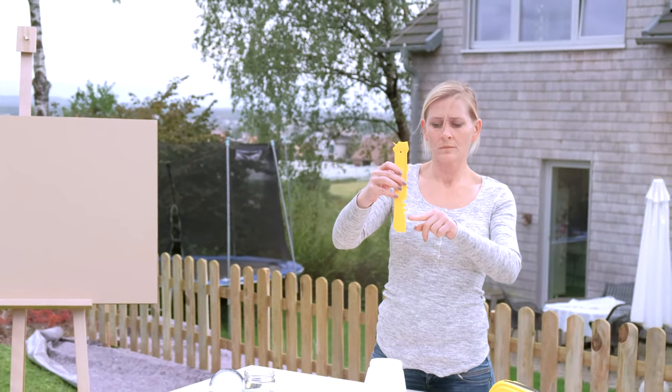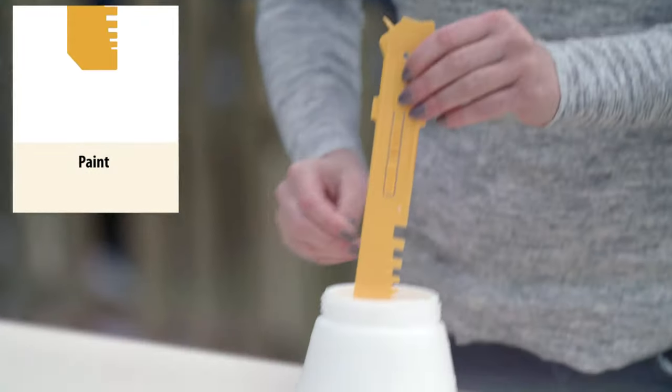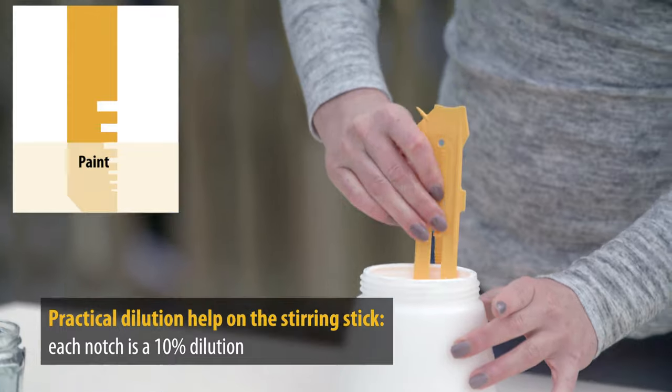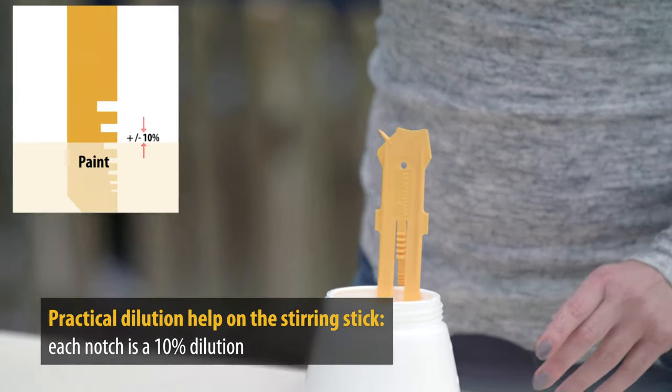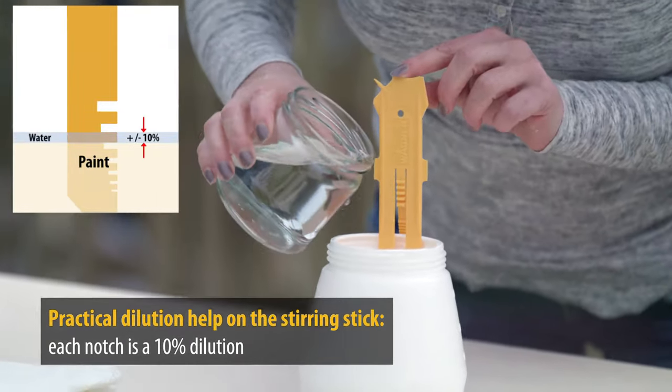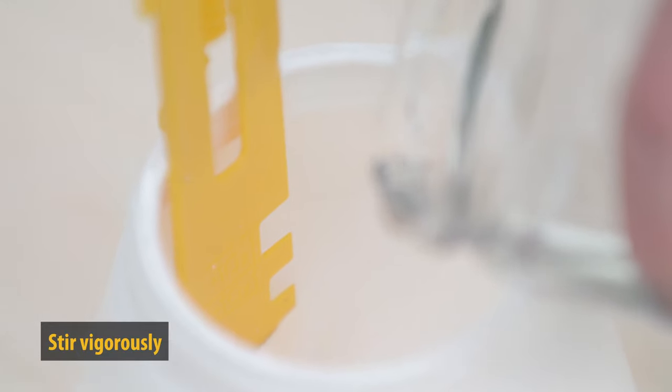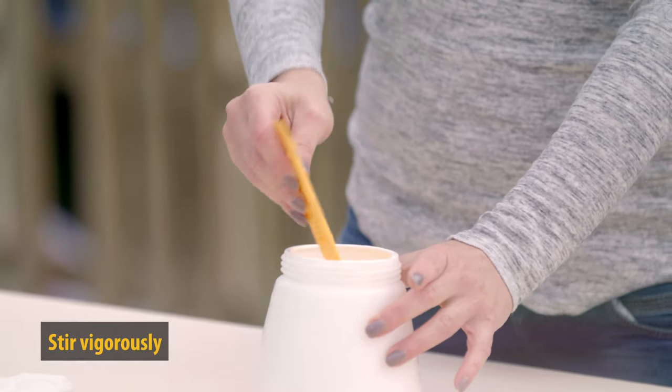Now she will dilute the paint with 10% water. The stirring stick in the packaging has notches, each indicating 10% dilution. Then stir well, and always ensure that there are no lumps in the paint.